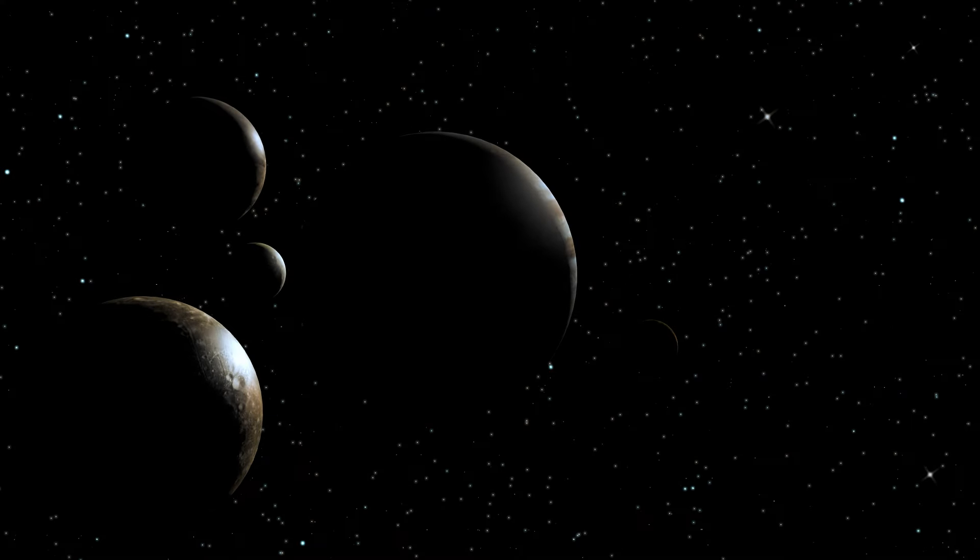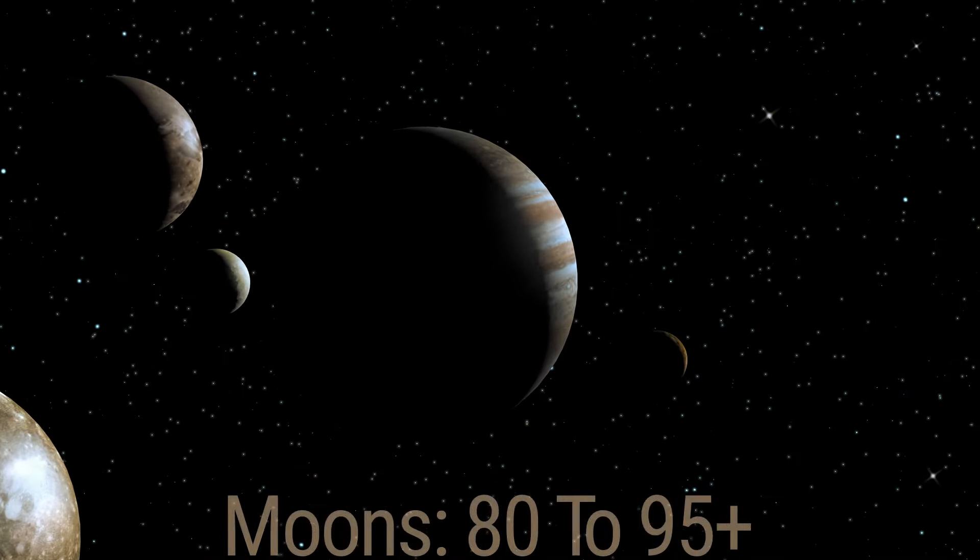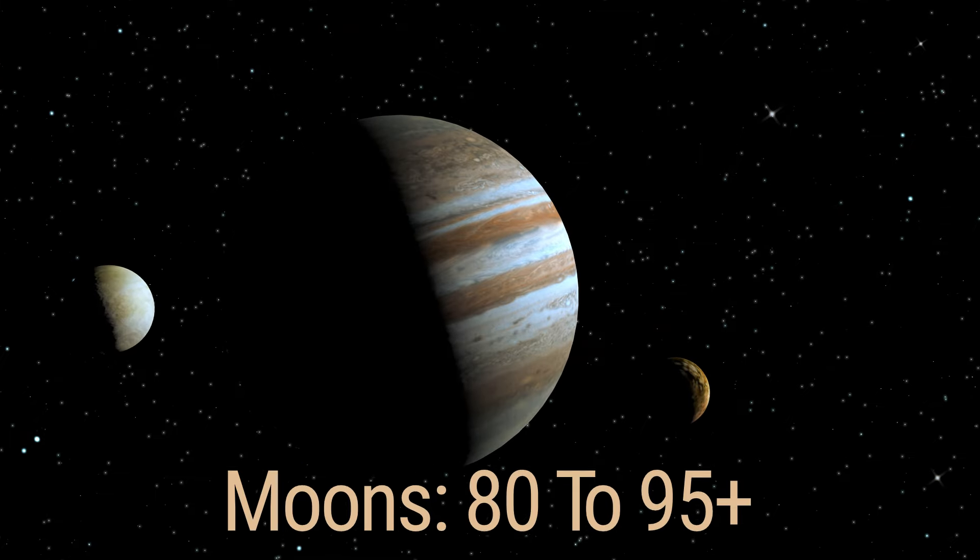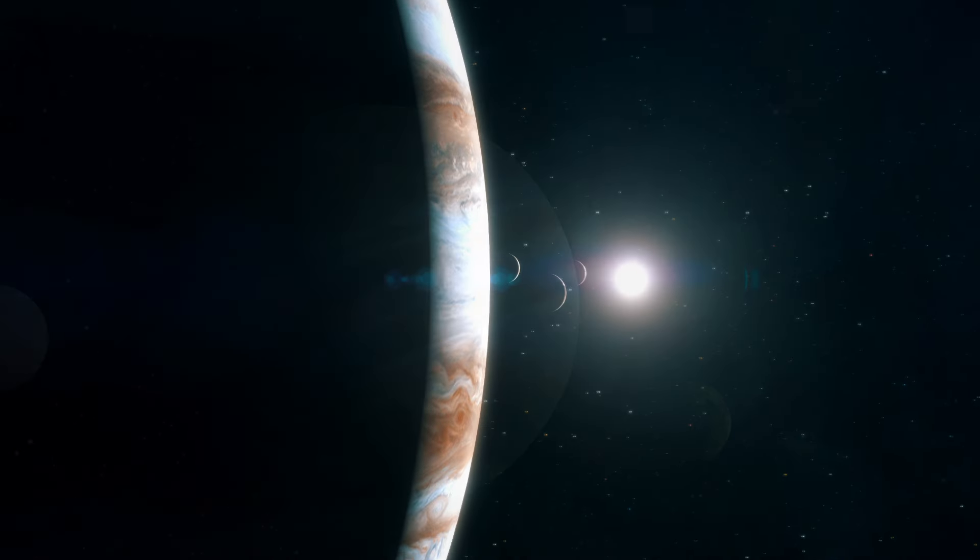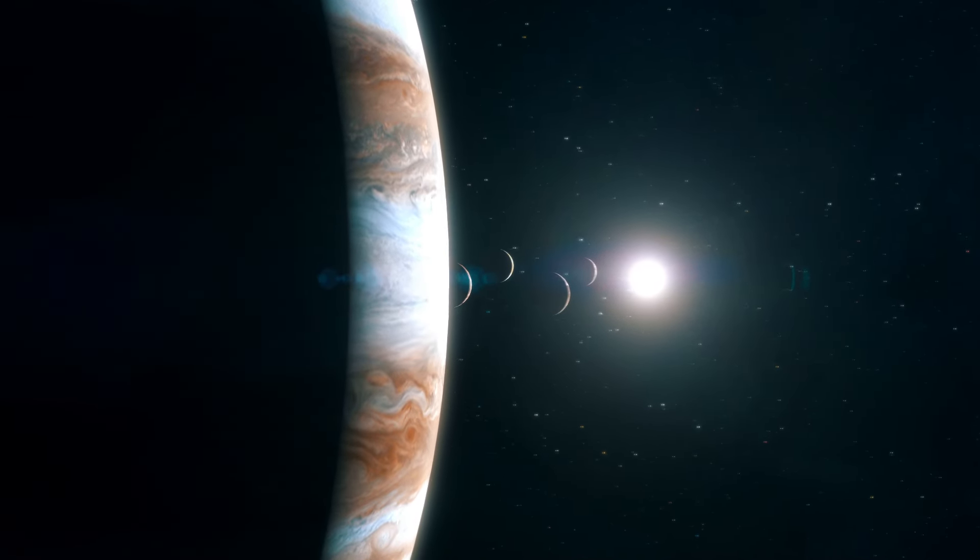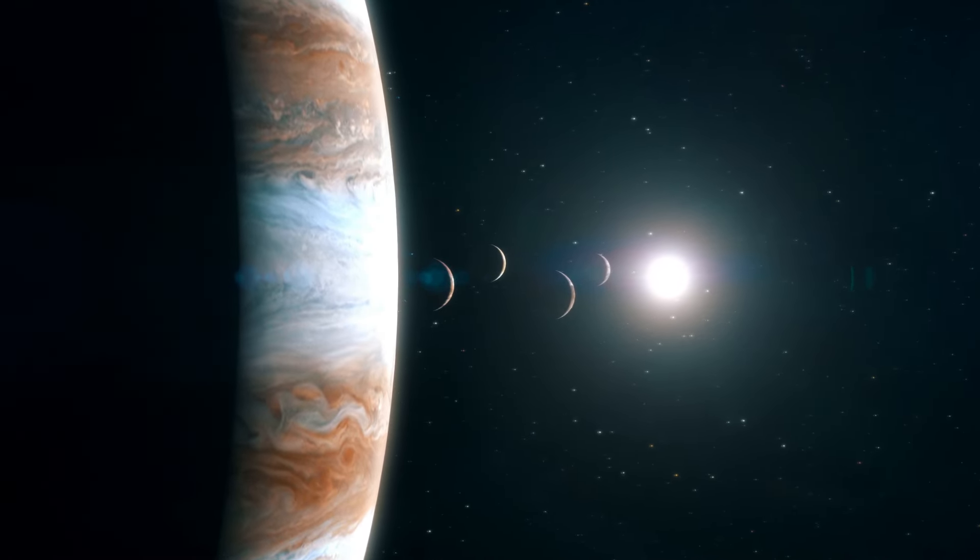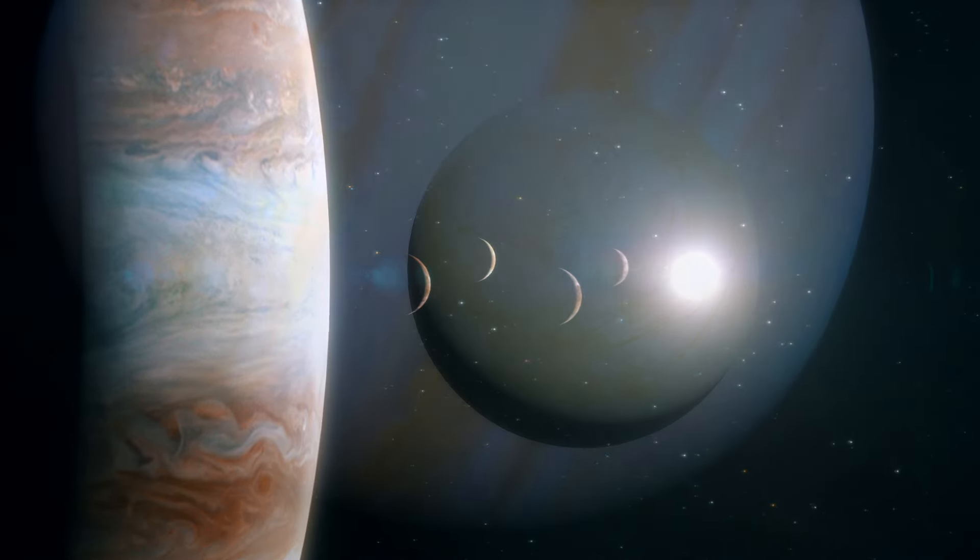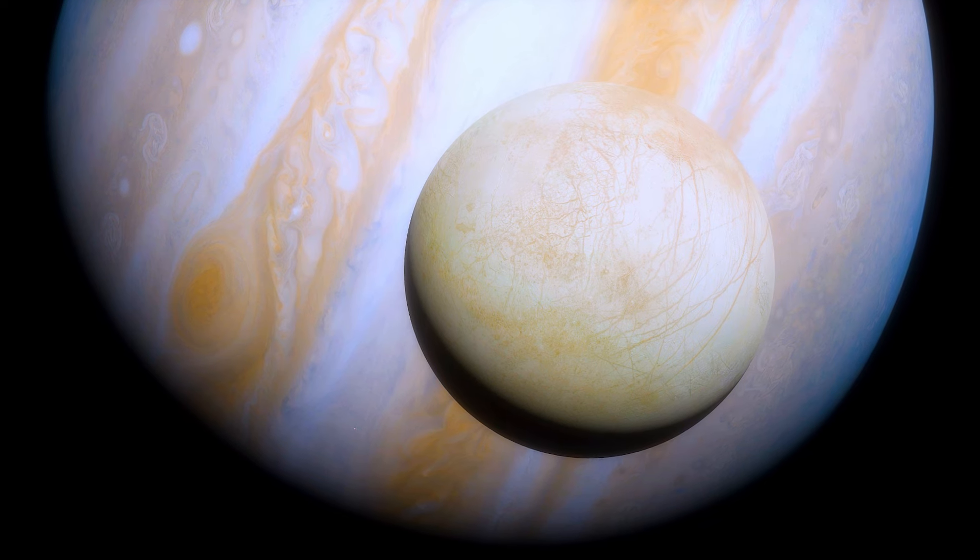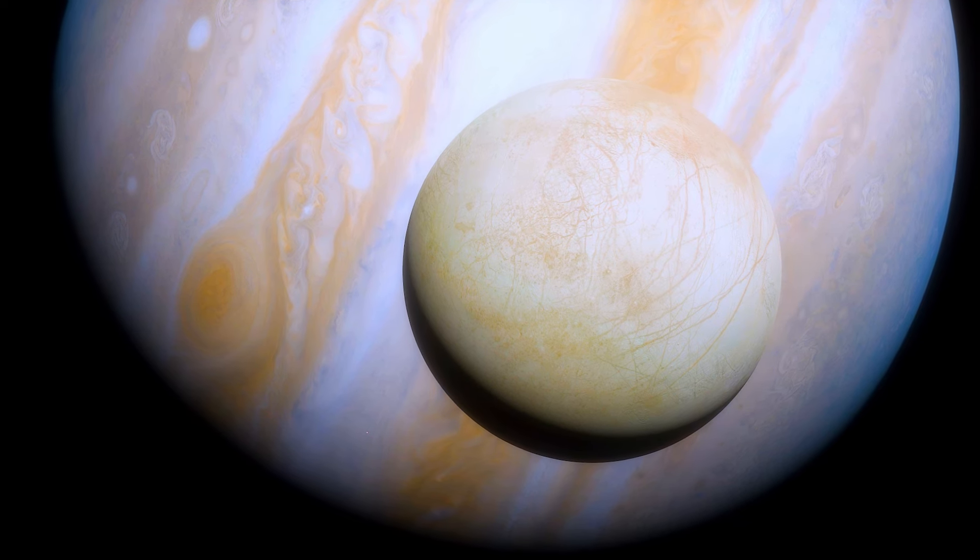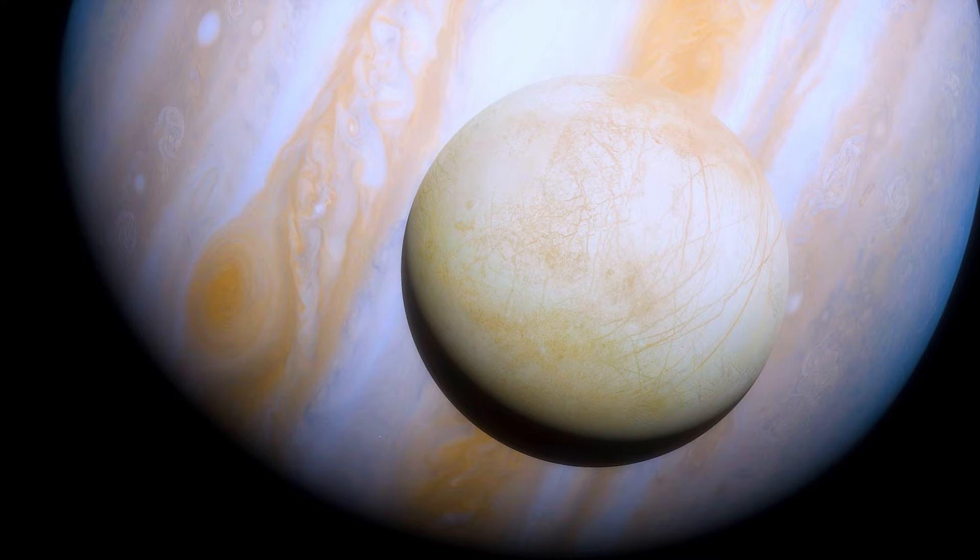Jupiter is a planetary system unto itself with 80 to 95 moons and counting. Among these are the four large Galilean moons: Io, Europa, Ganymede, and Callisto. Some of Jupiter's moons are in a scientist's radar for possibly containing the conditions for life. Europa is one of such moons.